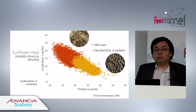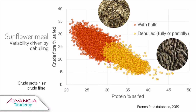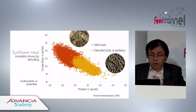Sunflower meal is the by-product of oil extraction, and its crude protein content is primarily driven by de-hulling. However, there is a continuum between de-hulled and non-de-hulled product, as de-hulling is itself a variable process — some soybean meals are entirely de-hulled, others only partially, and genetic variation affects how easily hulls can be removed.